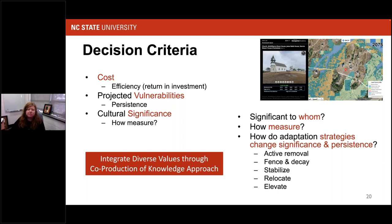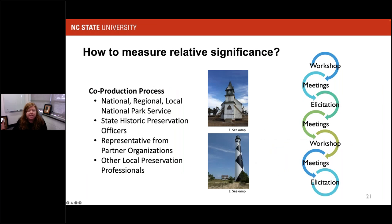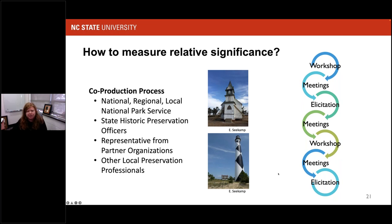We wanted to integrate diverse values through a co-production of knowledge approach, bringing together different individuals to help answer these questions. We brought together National Park Service staff from the Washington office, regional offices, and local parks. We also brought in the North Carolina State Historic Preservation Office staff, representatives from partner organizations with direct ties and lineages to both historic villages, and local preservation professionals grappling with similar decisions but without the same regulations as the National Park Service. The co-production process was iterative — we met for a week, had individual meetings, did online elicitations, brought everybody back together, repeat, until we had a model we could work with.